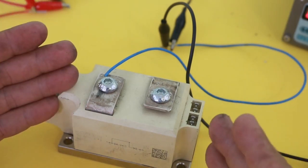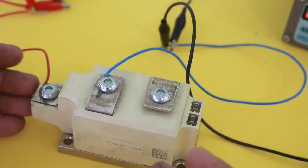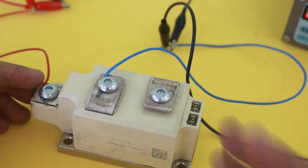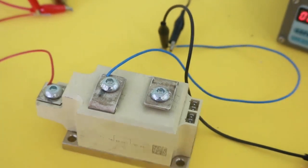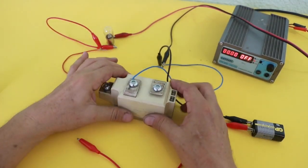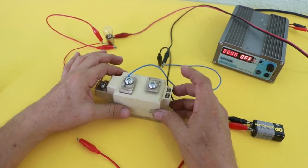...the current flows in just a fraction of a second, the time that takes for the capacitor to discharge, but it is a very high current. It can be hundreds or even thousands of amps, depending on your capacitor bank.